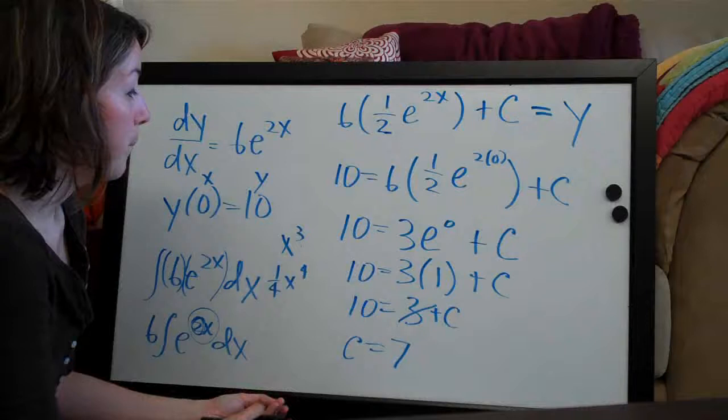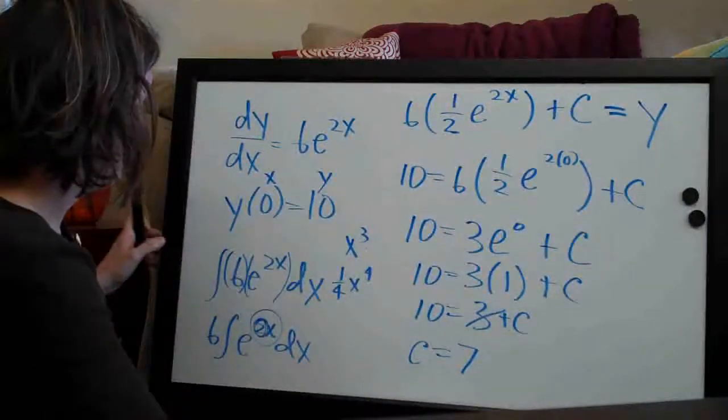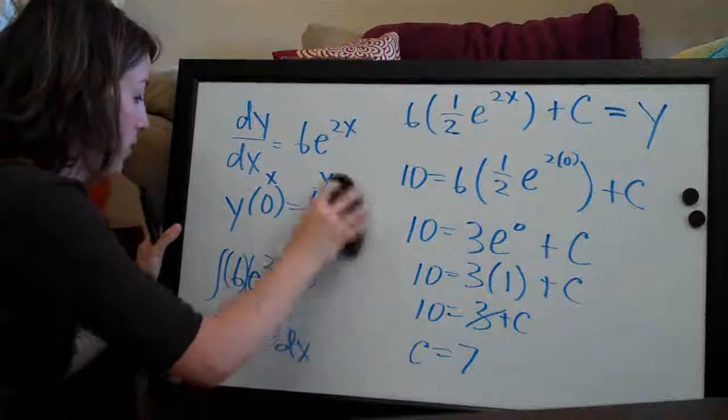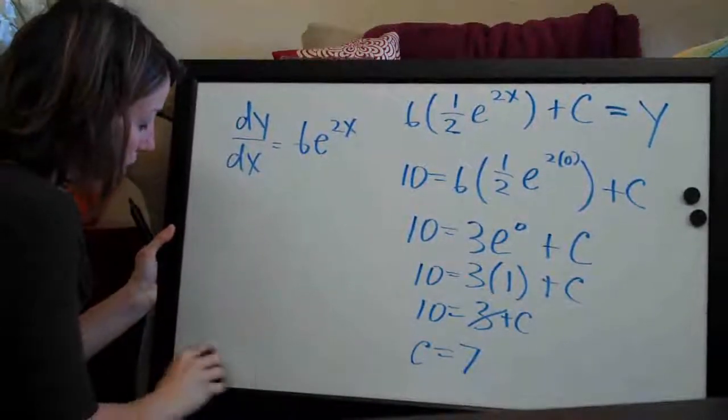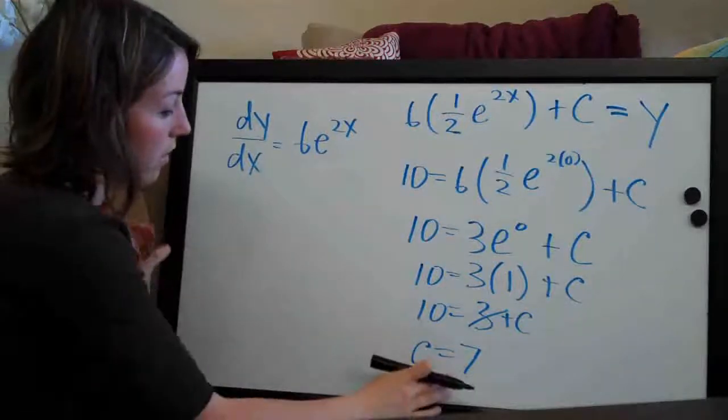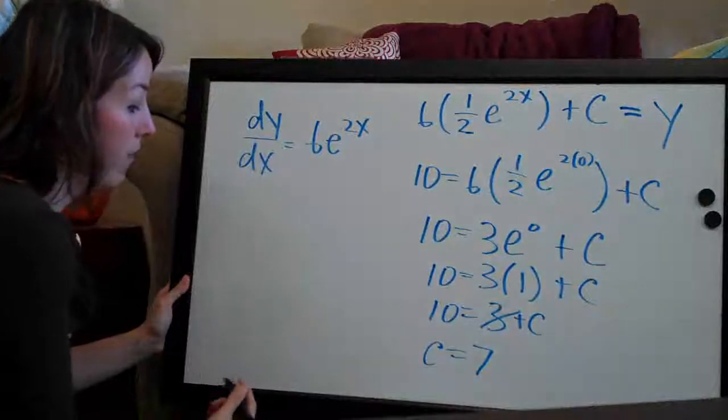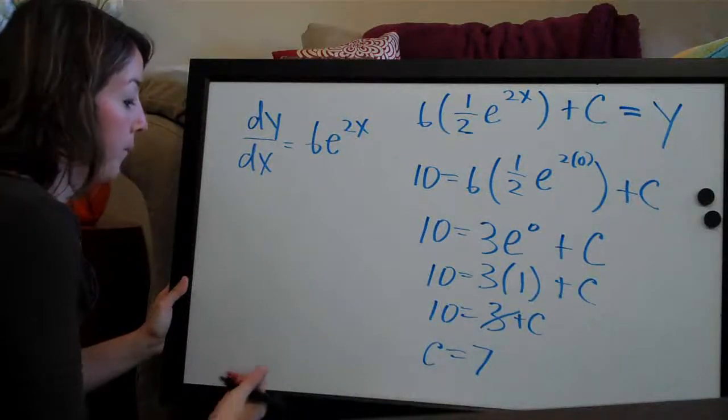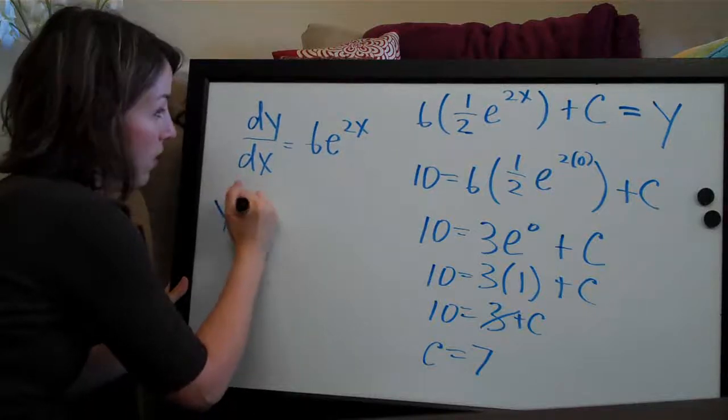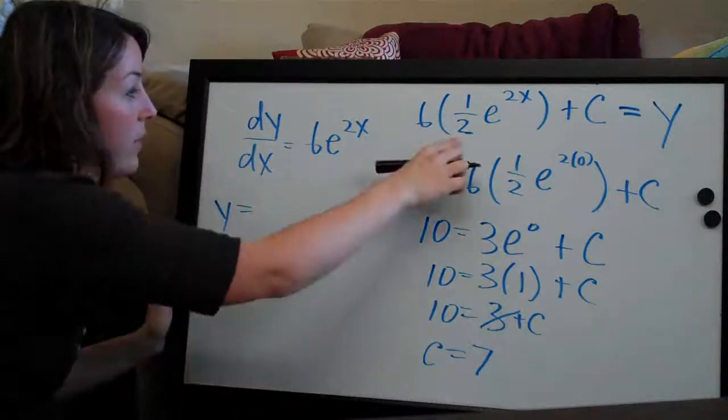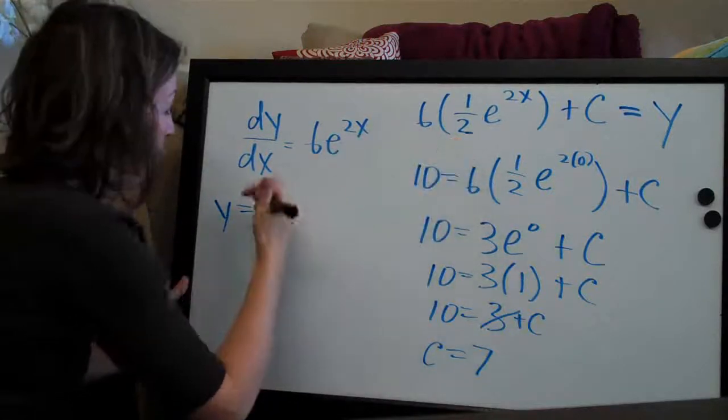So our final answer, let's go ahead and erase this section. For our final answer, we're going to plug c, our answer for c, back into this equation and simplify. So I'm going to say y = ... we have 6 × 1/2 or 6 divided by 2, which is 3.